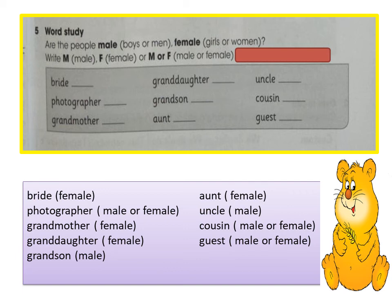Kita bahas tugas yang sudah kalian pelajarkan. Bride — artinya pengantin wanita, otomatis dia female. Photographer — ini adalah sebuah profesi yang bisa digeluti oleh male or female. Kemudian grandmother, nenek kalian pasti female. Granddaughter juga seperti itu, cucu perempuan pasti female. Grandson, cucu laki-laki pasti male. Kemudian aunt, bibi kalian adalah female. Uncle adalah male. Cousin, sepupu kalian, bisa laki-laki atau perempuan. Guest juga seperti itu — tamu bisa laki-laki atau perempuan.